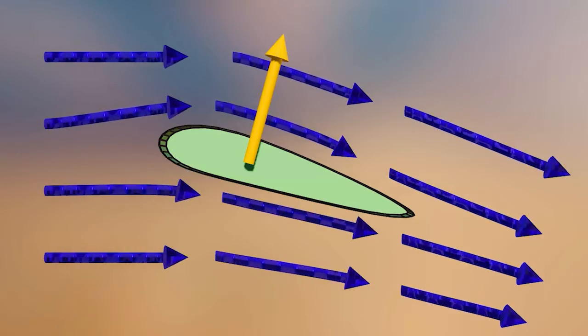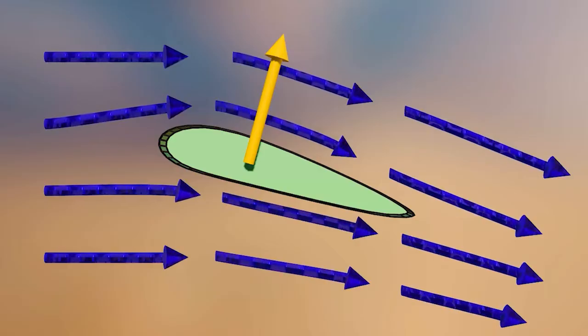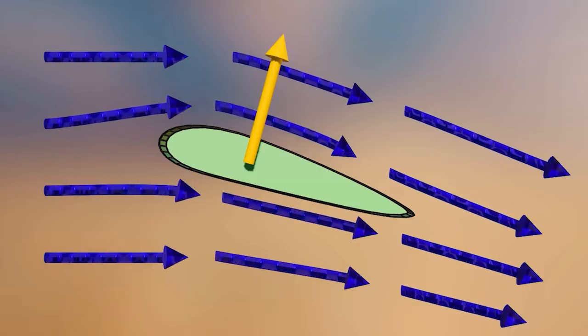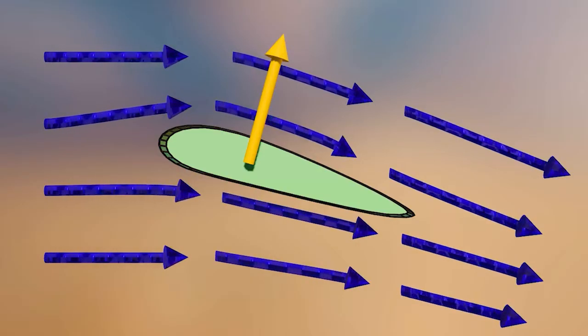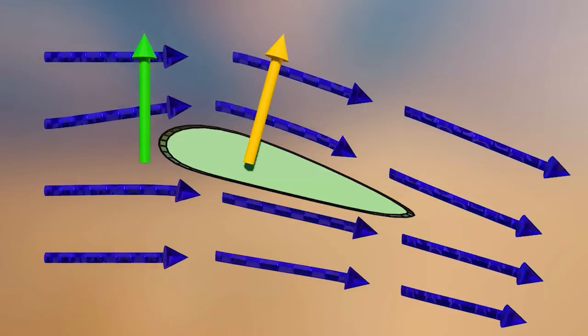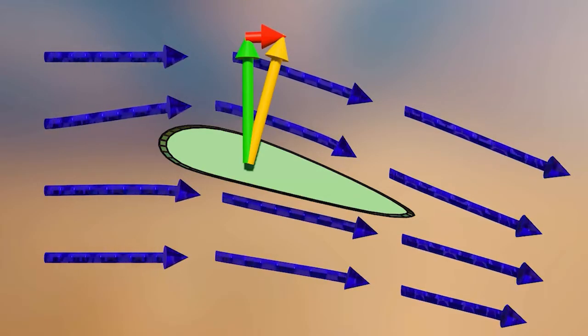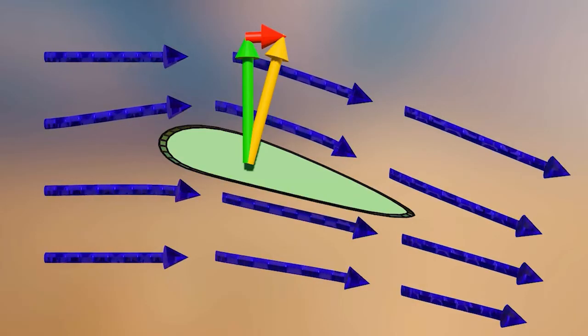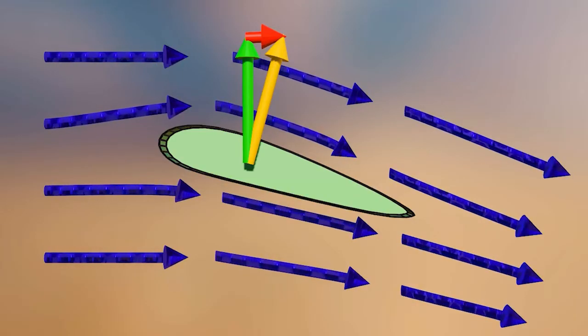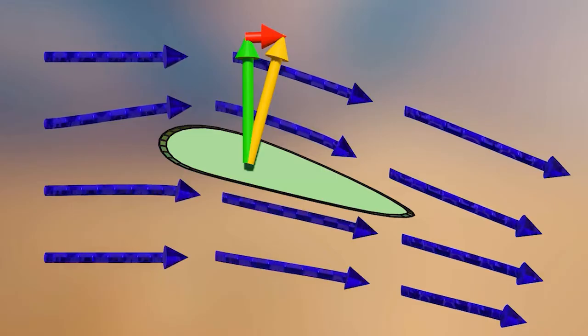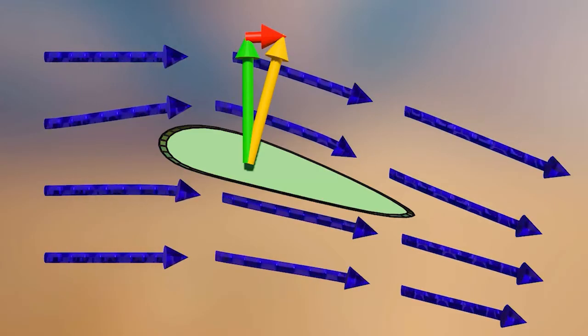Although the lift is acting at an angle, we're interested in the components that are perpendicular and parallel to the free stream relative airflow. The perpendicular component is lift. The parallel component acts back and opposes the forward motion of the aircraft, contributing to drag. This portion of drag is called induced drag.